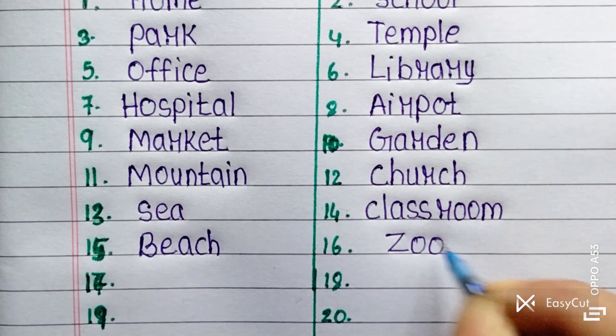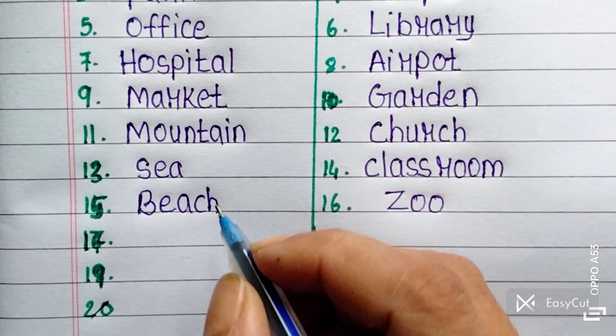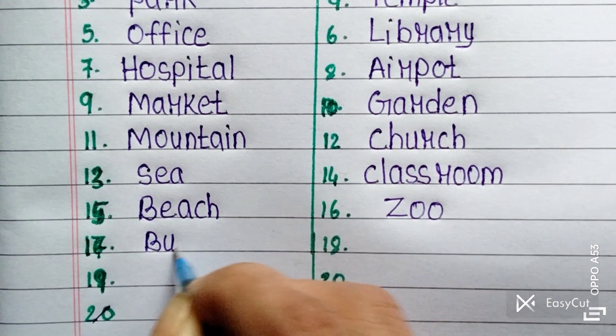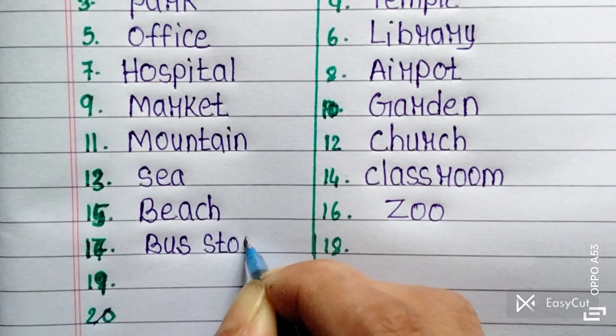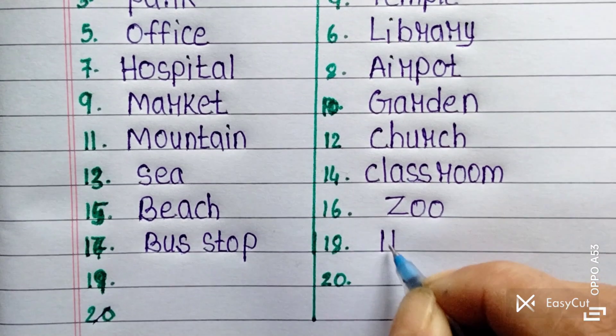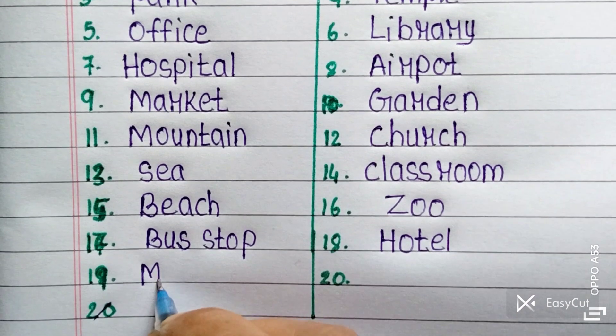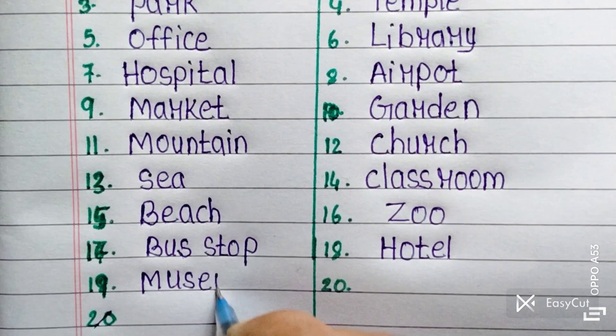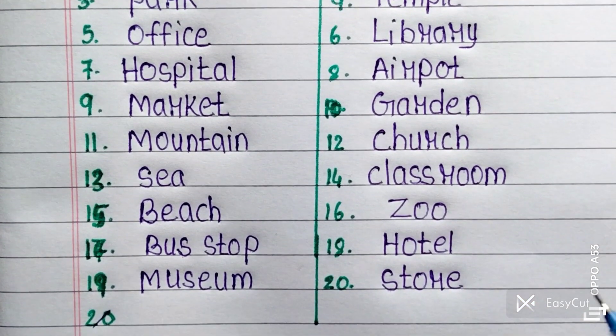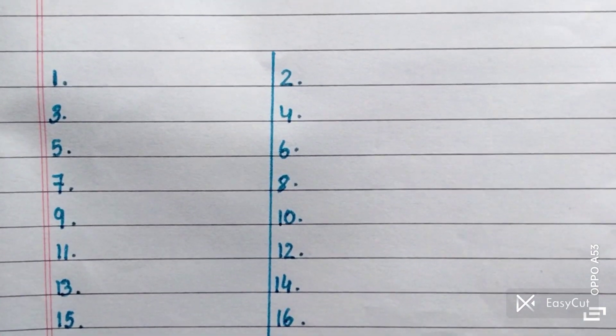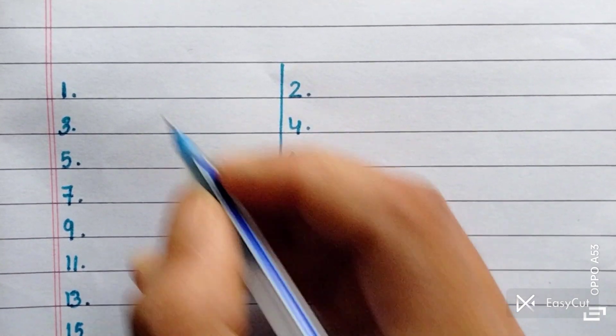Zoo, library, museum, store. Next one is the names of things.